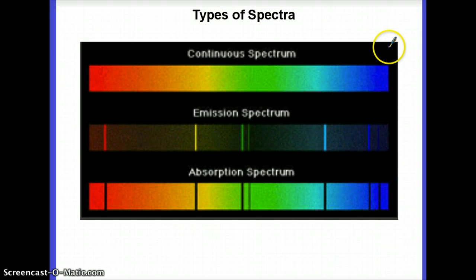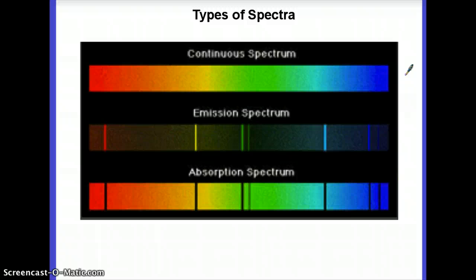You have the first kind, which is a continuous spectrum. That's just a very smooth band of color. Very smooth and consistent. You don't see any particularly bright things. You also don't see any black things. A black thing would be where there is no light of that particular color.